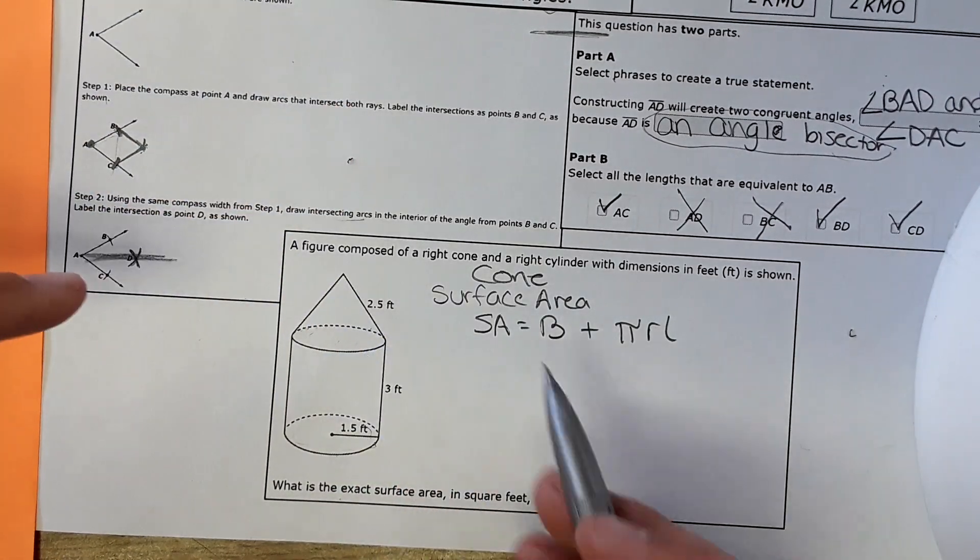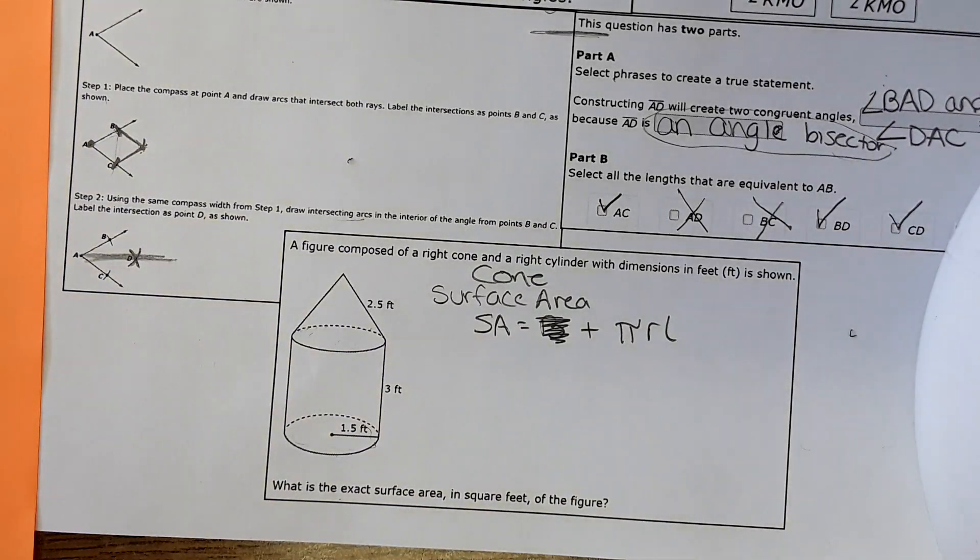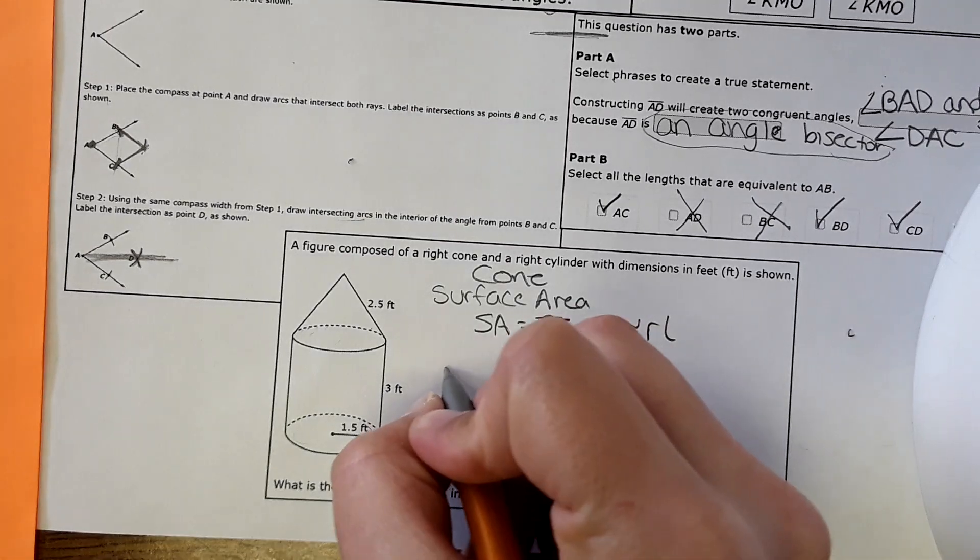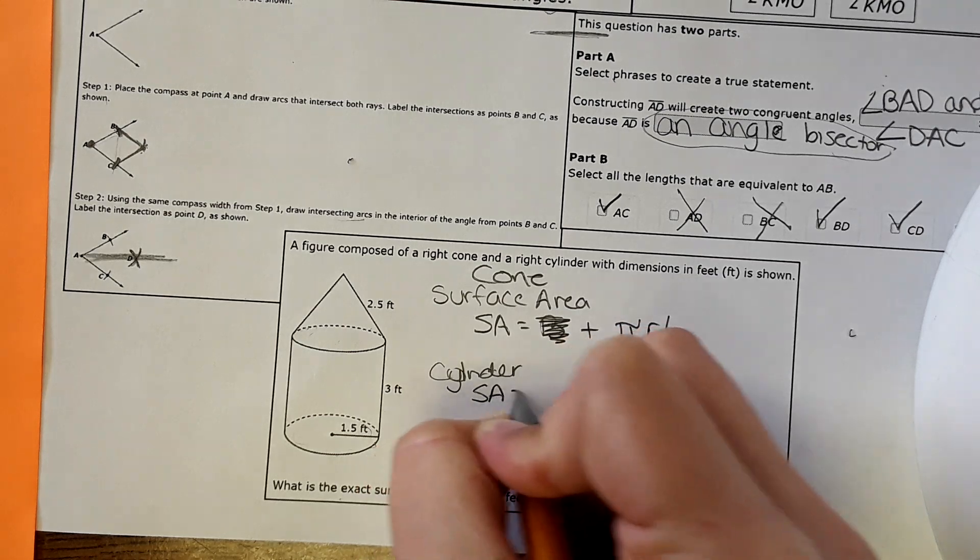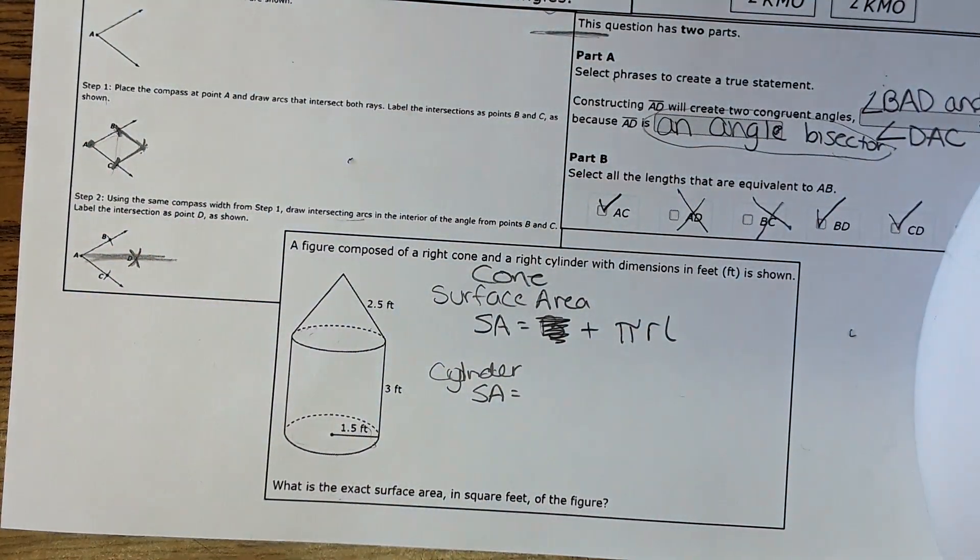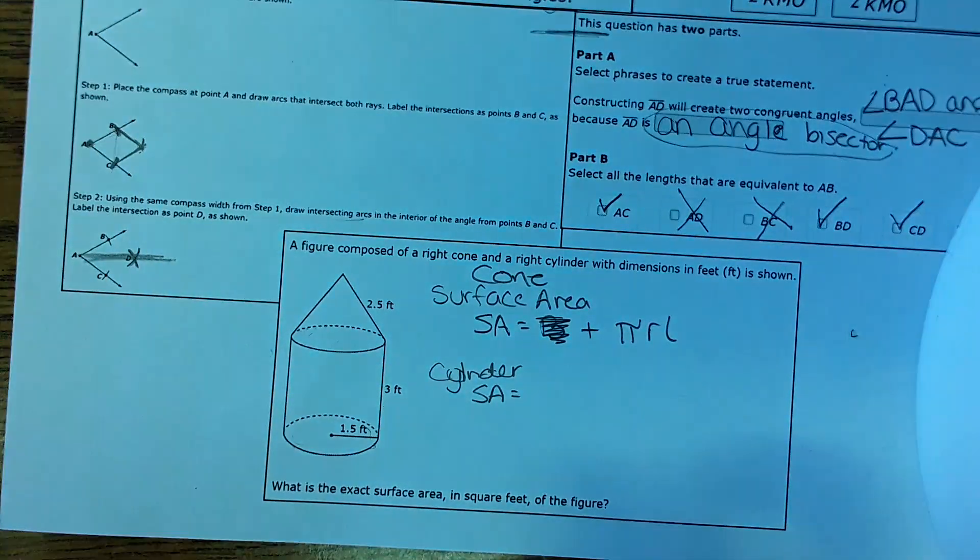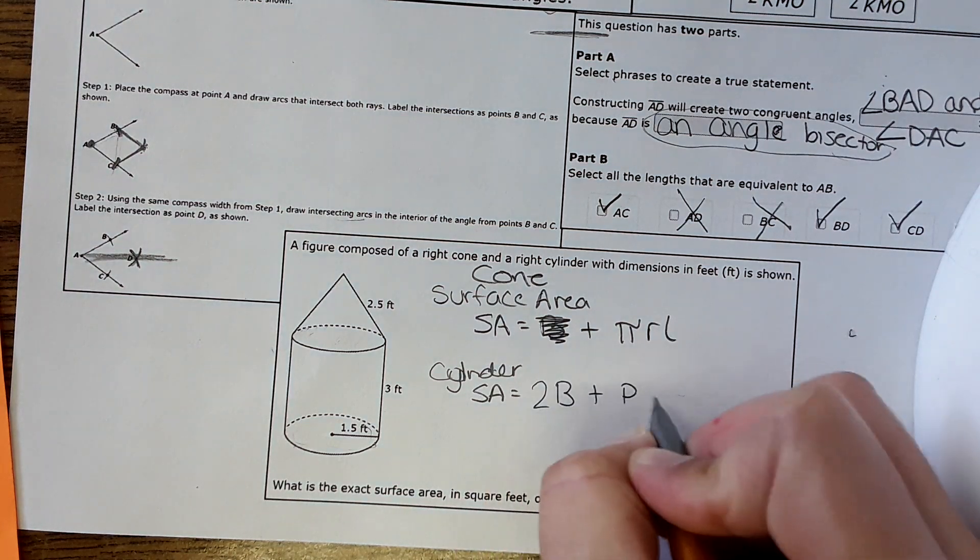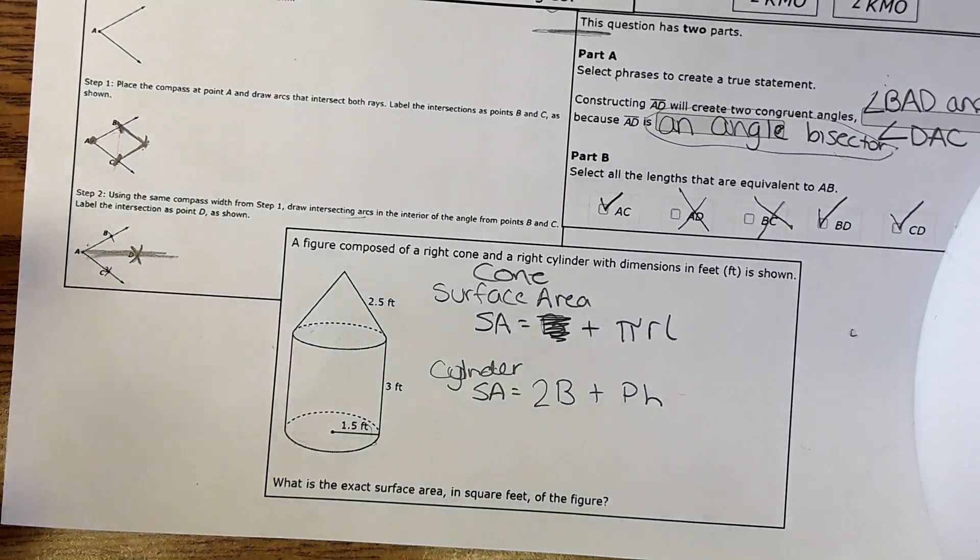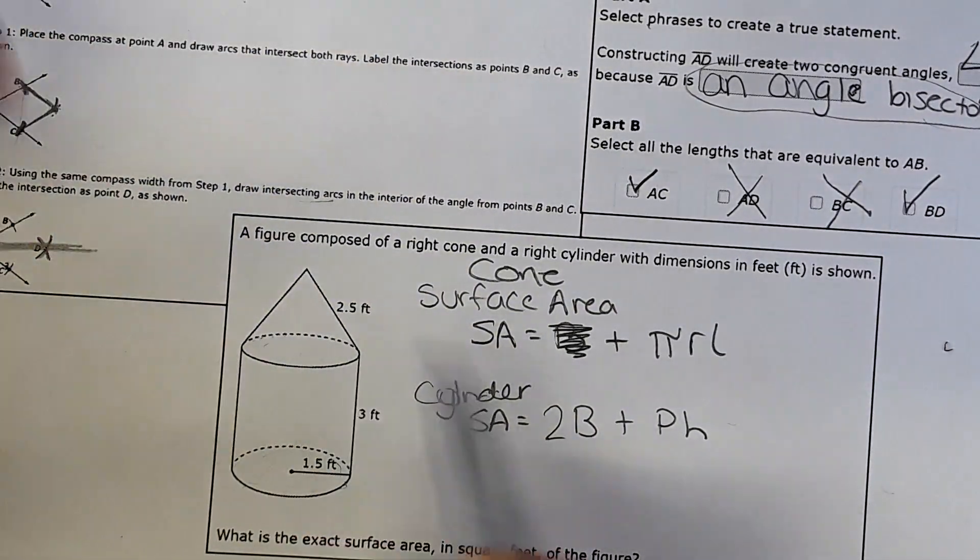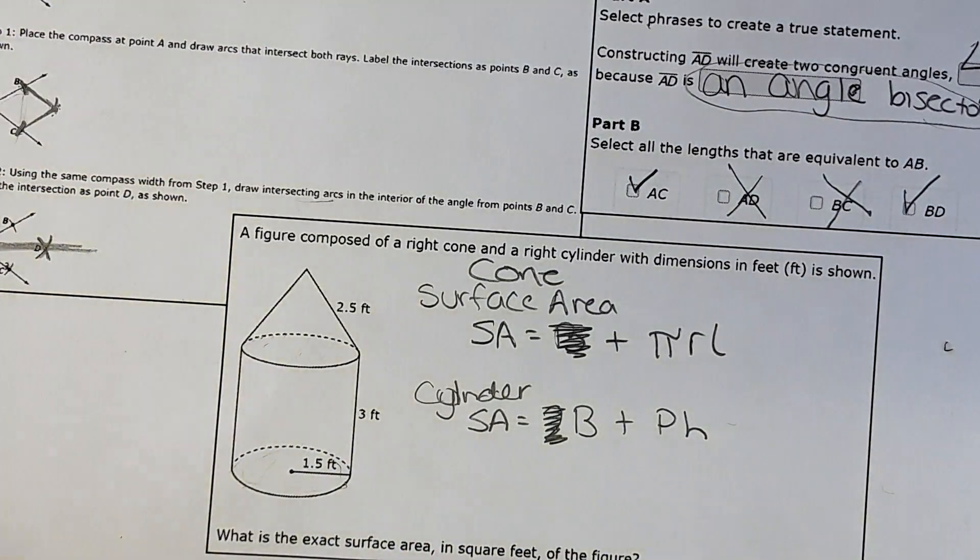Then we need to find the surface area of the cylinder. Surface area of the cylinder - I'm going to the reference sheet. That is right here: two times the base plus perimeter times height. But with the cylinder we only have one base, the other one isn't there, so just take out this two and it's just one base and then the perimeter times the height.